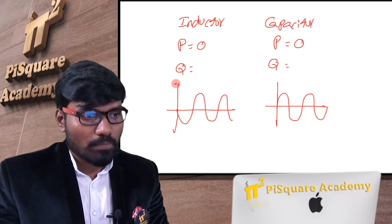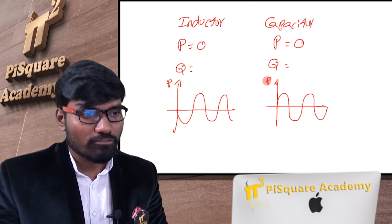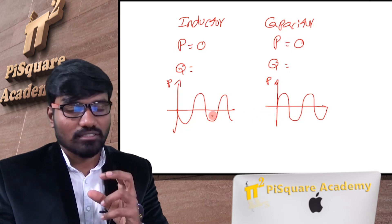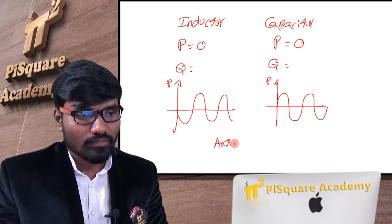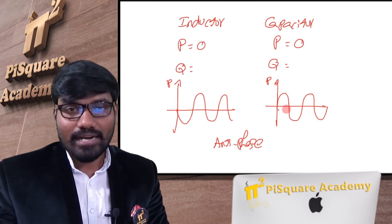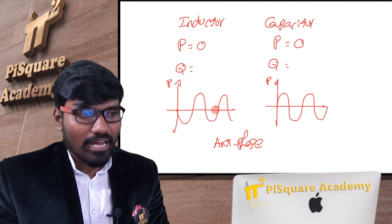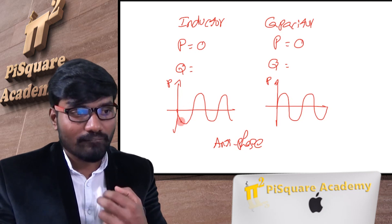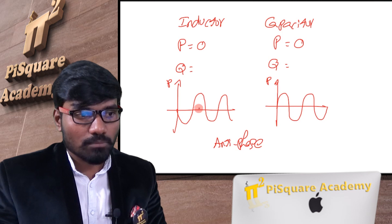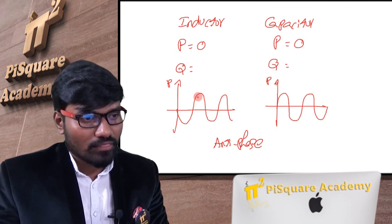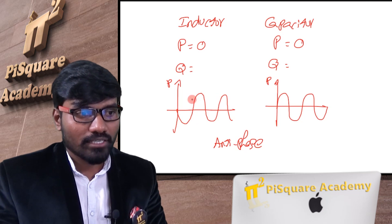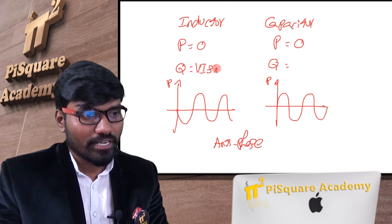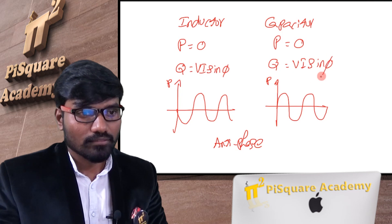The instantaneous power for a capacitor and an inductor are exactly opposite to each other — they are antiphase. The average power is zero for both. But there is an exchange of power. So, the maximum value of this changing component, we will call reactive power. The maximum value is V i sin φ for both the inductor and capacitor cases.